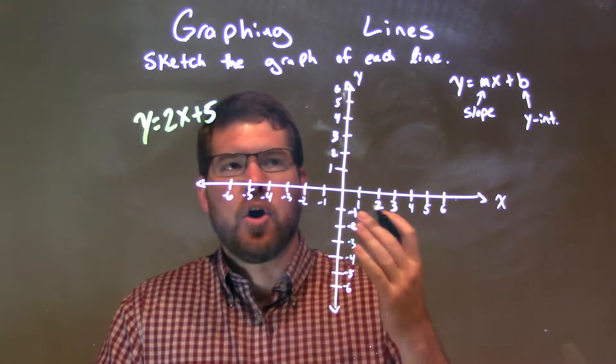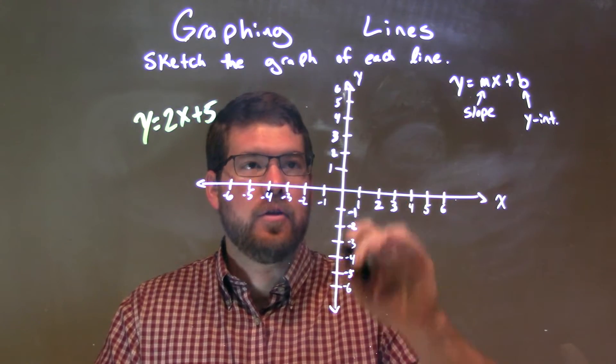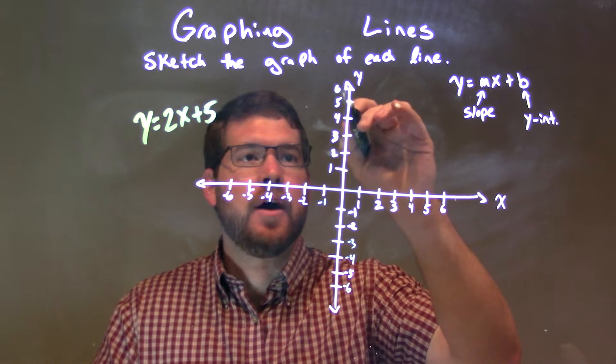Well, 5 is our y-intercept, our b-value. So I look at that y-intercept, and I have a 5 right there.